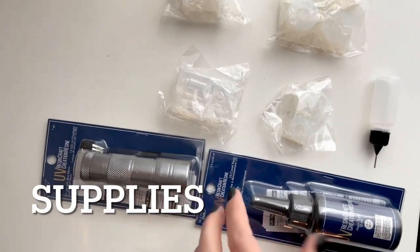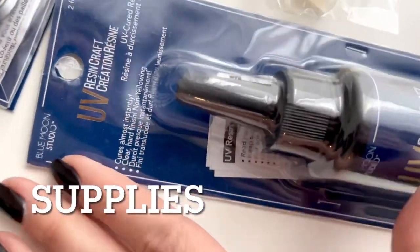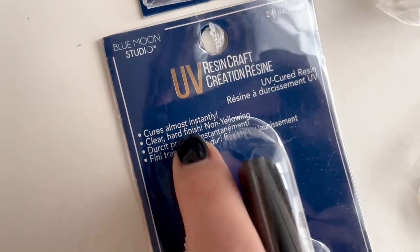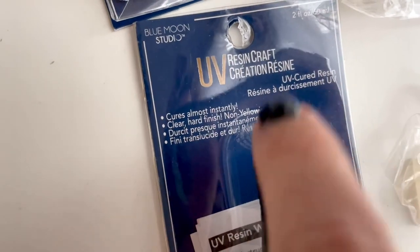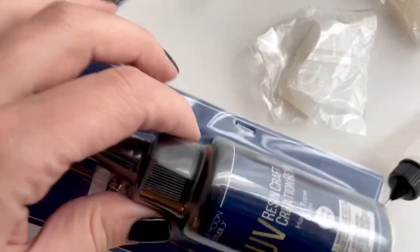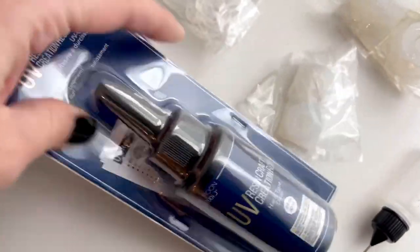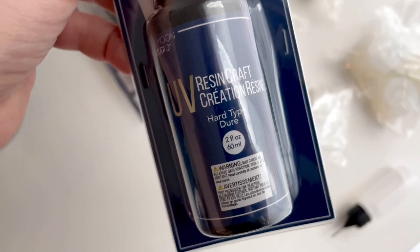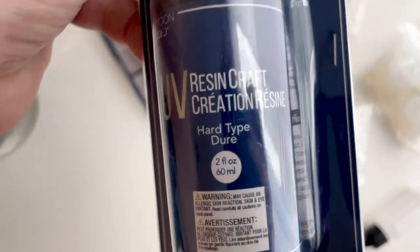And here are the supplies that I am using. I am using some UV resin and I got this one because it says it's non-yellowing. Many projects that I've made in the past with resin have turned yellow so this was really important for me to buy one that was non-yellowing.